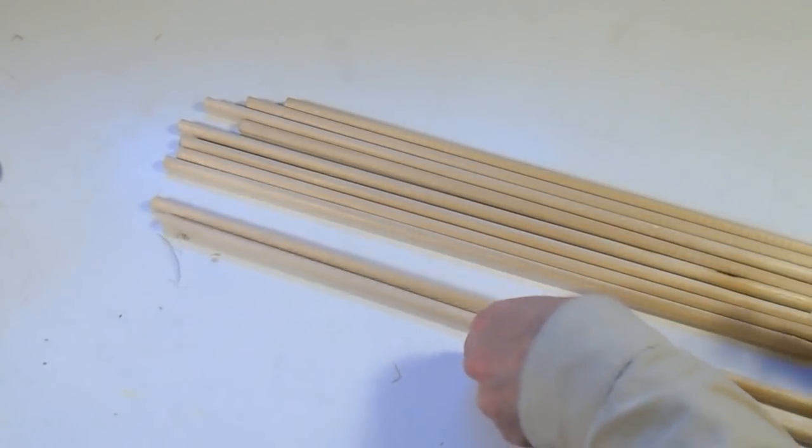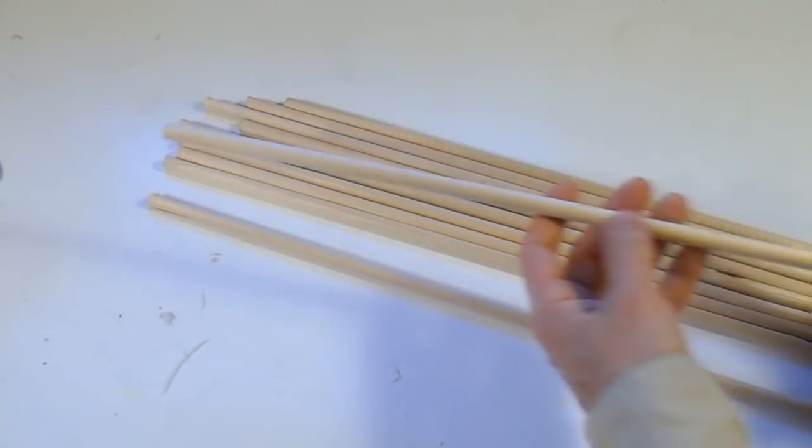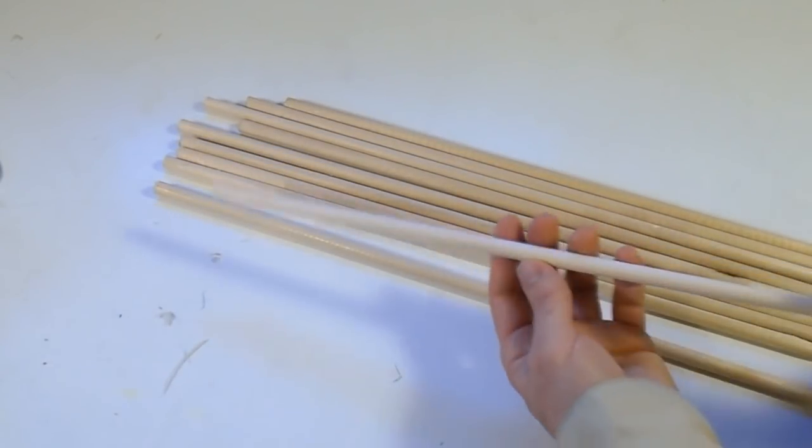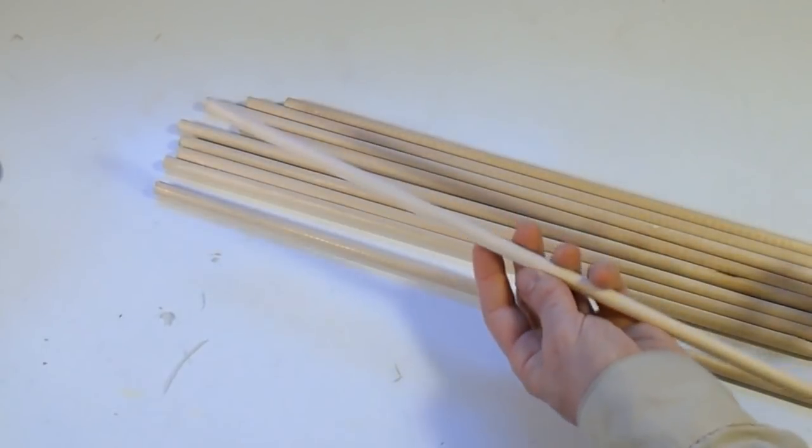Here's a batch of dowels that I've made. They've all got a bit of a spiral on them from how they went through the dowel maker. Let's check them for accuracy. They're supposed to be 3/8ths of an inch which is 375 thou.